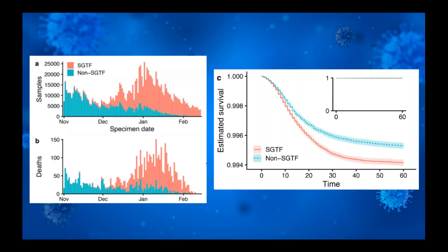In the lower graph on the left, you see the same breakdown by date but now by deaths. B.1.1.7 had not been present in November, so not surprisingly it was not causing death, but by February it was causing almost all deaths. The graph on the right shows the estimated survival over time for those without B.1.1.7 in green and for those with B.1.1.7 in red. Those on the red line with B.1.1.7 were less likely to survive. The authors report an overall difference in survival between the two groups of about 0.64%, and given the size of the data set, this difference does truly appear to be the case.